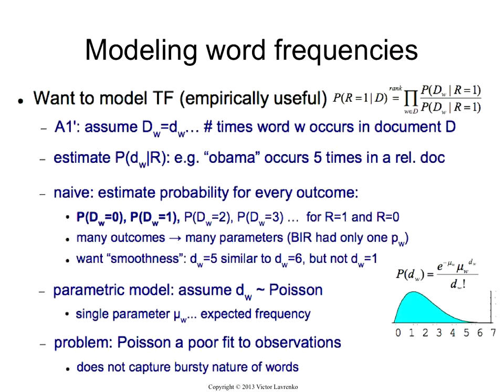The way to do that is you take your first assumption and you change it. So instead of assuming that dw is a Bernoulli variable — 0 or 1, occurs or doesn't occur — now we can model the counts. So dw is going to be the number of times that the word w occurs in document D. Then we have to estimate these probabilities: the probability that dw occurs x number of times in a randomly picked relevant document or in a randomly picked non-relevant document. It's not just occurrence and non-occurrence — it's what's the probability that it occurs that many times.